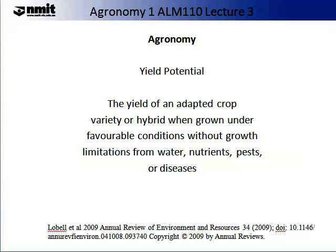Now let us look at yield potential. The yield of an adapted crop, variety, or hybrid, when grown under favourable conditions without growth limitation from water, nutrients, pests, or diseases, is defined by Lobel in 2009 as yield potential. Often in agronomy, we do not obtain our yield potential — sometimes because of the climate, and other times, as farmers, we make decisions not to obtain it because the inputs would be economically unviable.